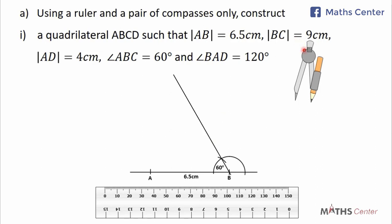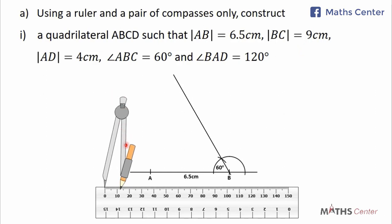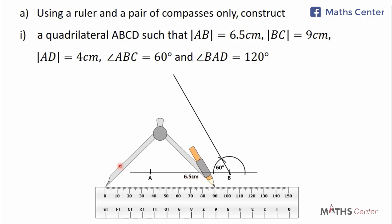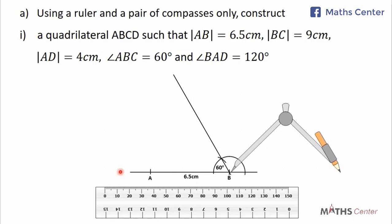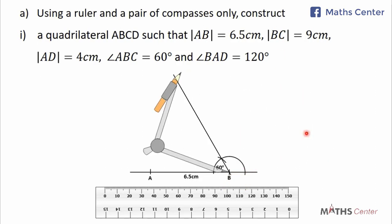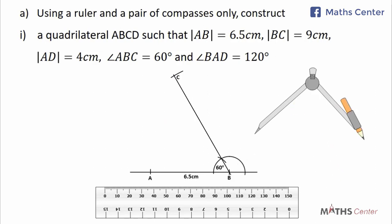With the same radius used to construct the semicircle, move the needle to the intersection point, turn it, and construct an arc. Draw a straight line to join the point of intersection of the arc and the semicircle to point B — the angle formed at point B is 60 degrees. The length of side BC is 9 cm, so measure 9 cm on the ruler, move the needle to point B, turn it and construct an arc. The point of intersection gives us point C.